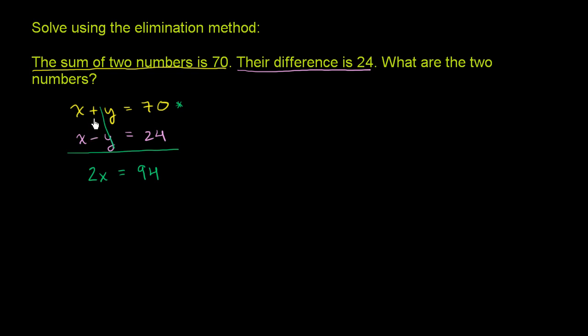Here we're calling it 24, here we're calling it x minus y. And we were able to eliminate the y. So we get 2x is equal to 94. Now we can divide both sides of this equation by 2, and we are left with x is equal to 47.